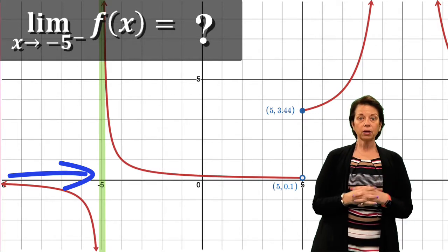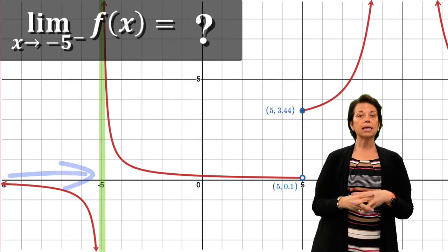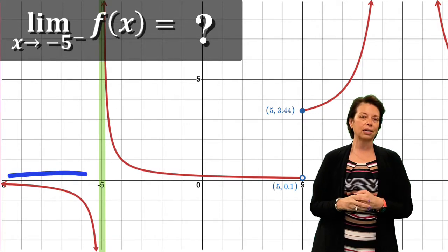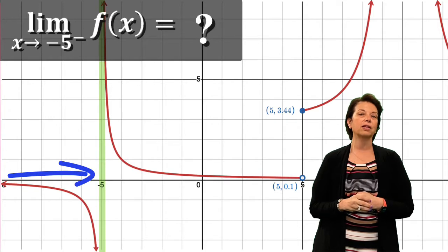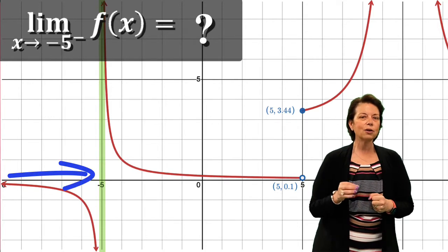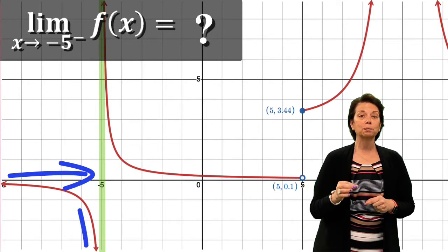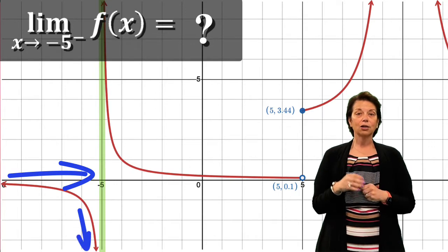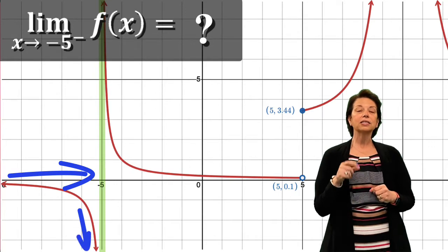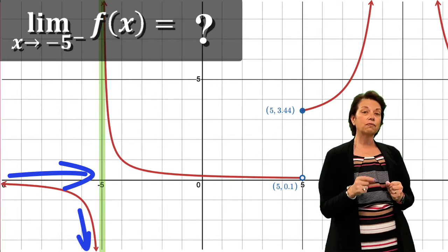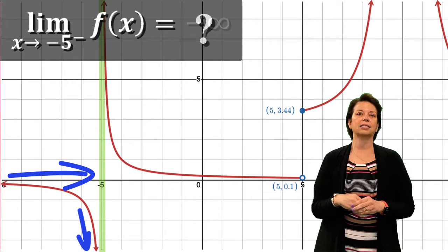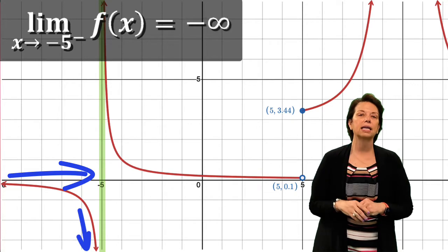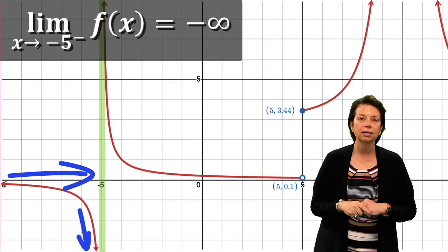From the graph we can see that as x gets closer and closer to negative 5 on the left side, those function values are actually exploding in the negative direction. So in this case the limit is going to negative infinity.